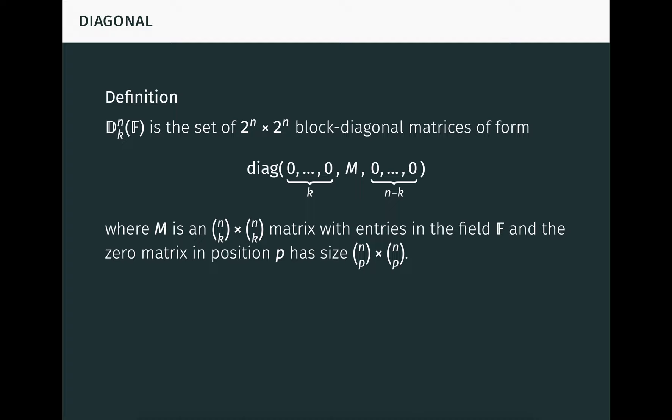dNKf denotes the set of 2 to the n by 2 to the n block diagonal matrices of the form seen here, where M is an arbitrary n choose k by n choose k matrix in position k, with entries in the field F, and the 0 matrix in position P has size n choose p by n choose p. We simply write dNk if the field F is understood, or dK if n is also understood. Informally, we can consider the matrix M to be in dK, and also to be in dN minus k. We think of the elements of dK as n choose k by n choose k matrices in position k along a diagonal, and the elements of dN minus k as those same matrices but in position n minus k along the diagonal. This perspective turns out to be very useful in studying a form of duality for matrices, as we'll see.